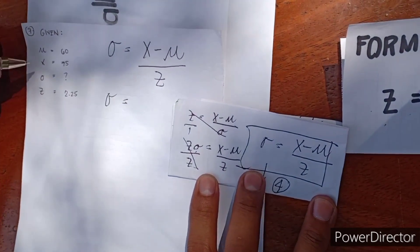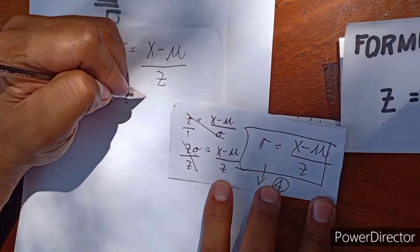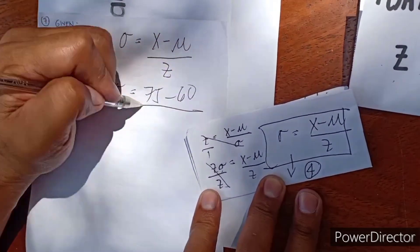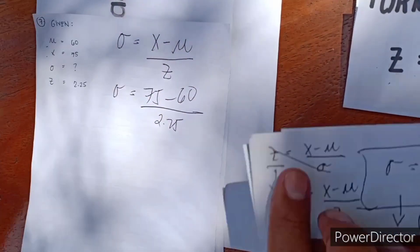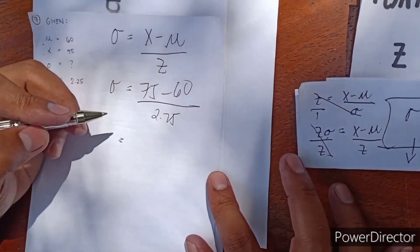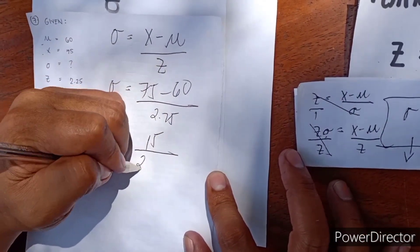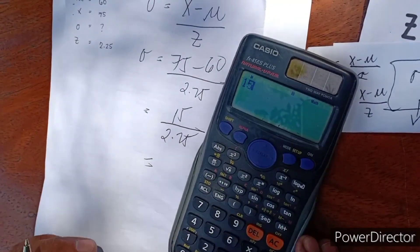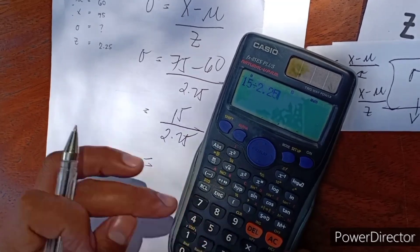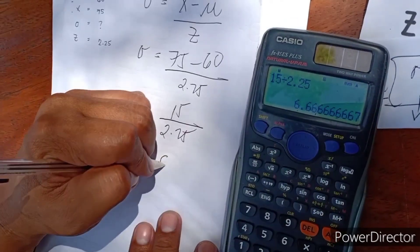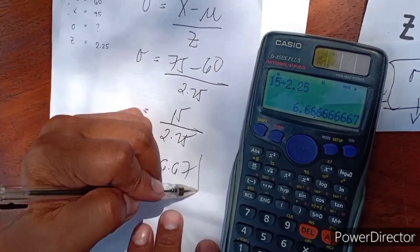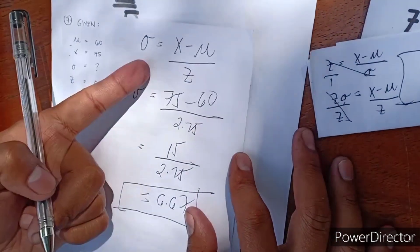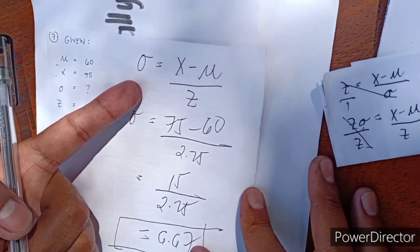Substituting: standard deviation equals X minus mean all over Z. X is 75, mean is 60, Z is 2.25. So standard deviation equals 75 minus 60 all over 2.25, which is 15 over 2.25. Using our calculator: 15 divided by 2.25 equals 6.67. Our standard deviation is equal to 6.67. This is our formula for finding the standard deviation.